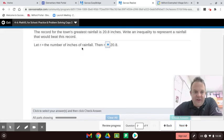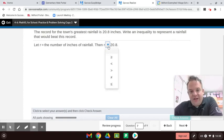Let R equal the number of inches of rainfall. The record for the town's greatest rainfall is 20.8 inches. Write an inequality to represent a rainfall that would beat this record. So we want to beat the record, not tie it. So it does not include 20.8. So the number, the inches of rainfall has to be greater than 20.8.